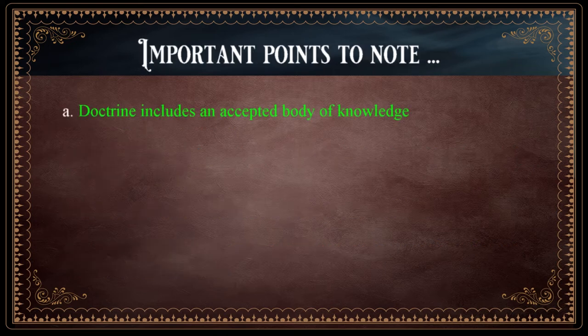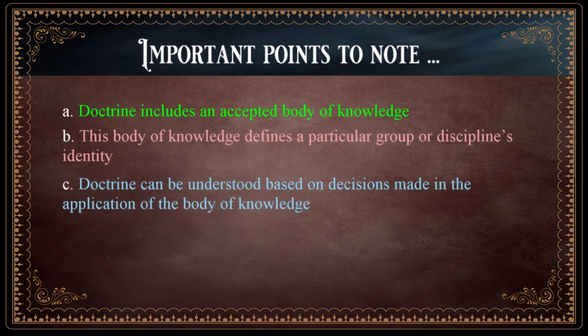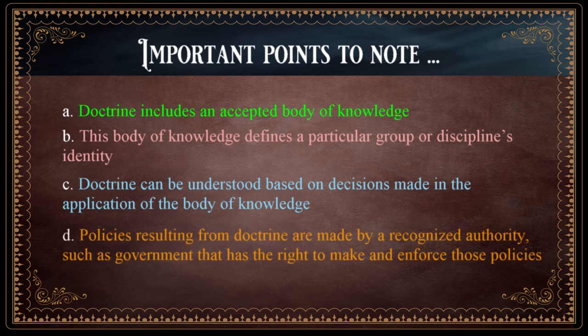From these statements there are important points to note: doctrine includes an accepted body of knowledge; this body of knowledge defines a particular group or discipline's identity; doctrine can be understood based on decisions made in the application of that knowledge; and policies resulting from doctrine are made by a recognized authority that has the right to make and enforce those policies. In human affairs, doctrine is fluid and subject to alteration over time — but what about the Bible?